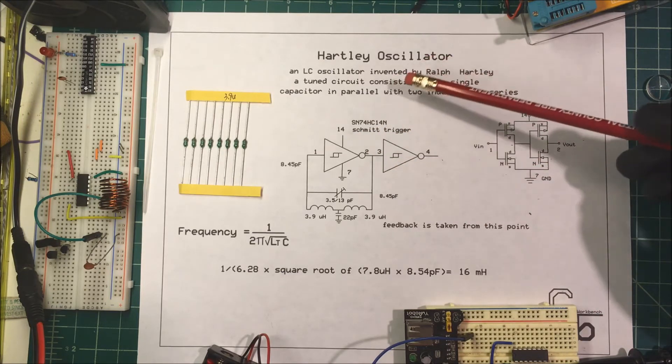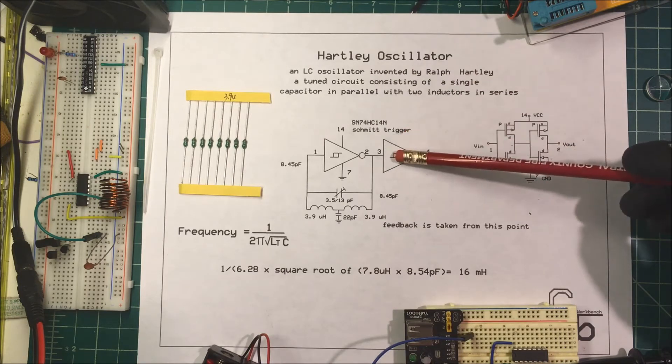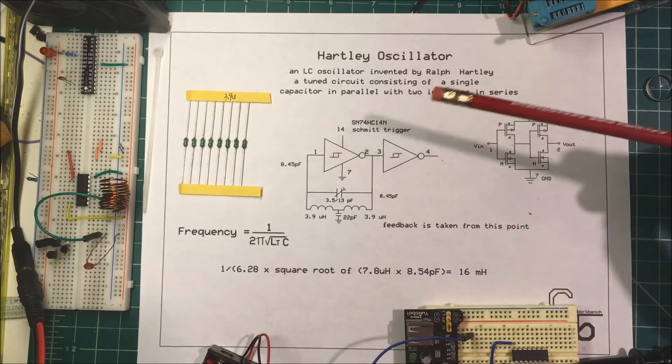Of course, he used tubes. We're going to use these Schmidt triggers. Now, these Schmidt triggers are good for us because they have hysteresis and they'll get rid of a lot of noise for us.